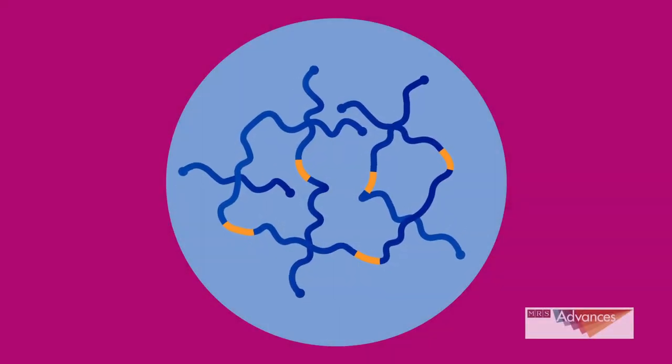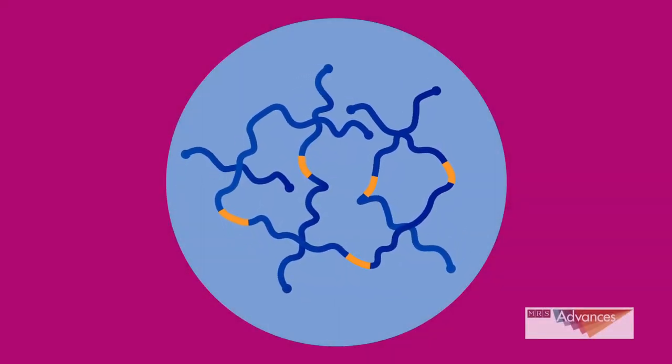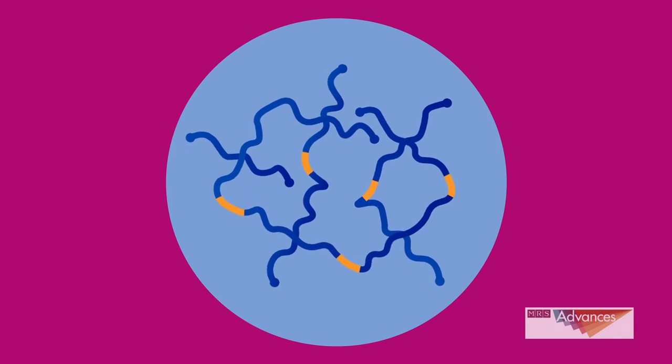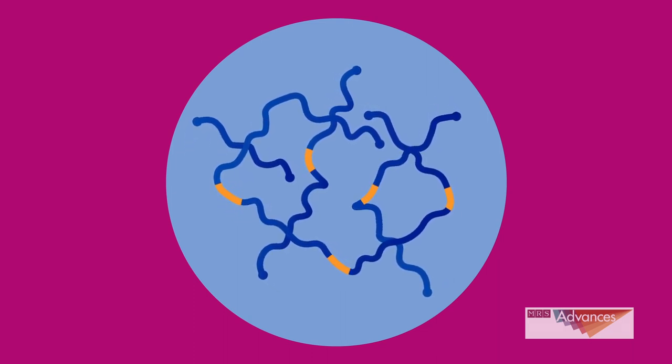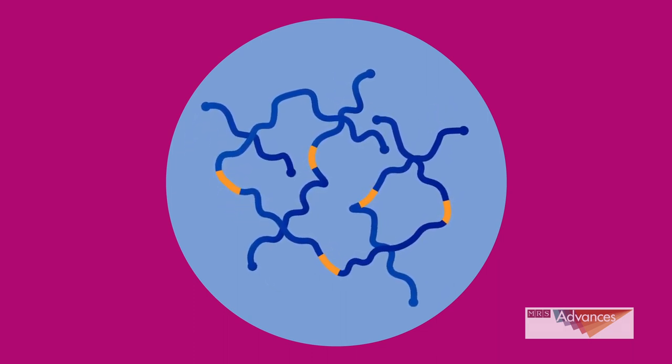A new 3D printable hydrogel could provide the perfect platform for growing, studying, and perhaps even repairing critical brain cells linked to diseases such as multiple sclerosis.